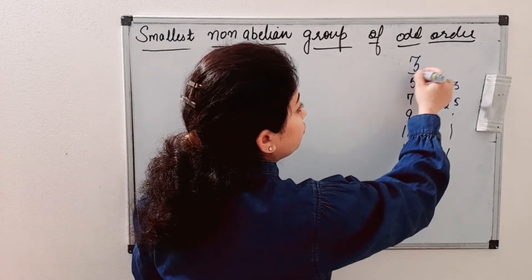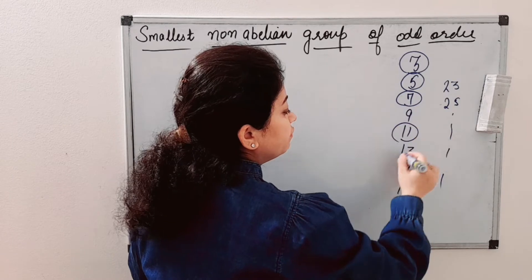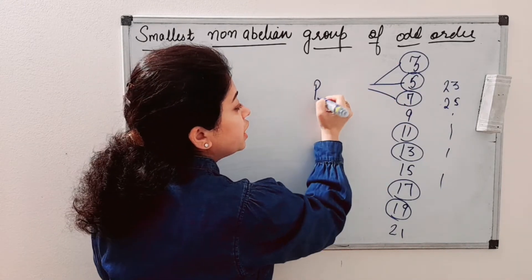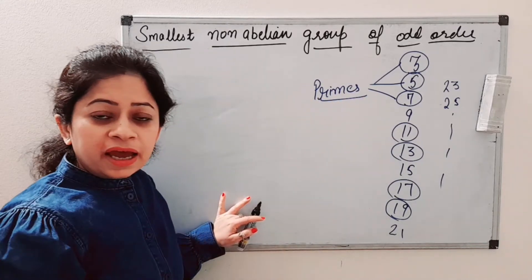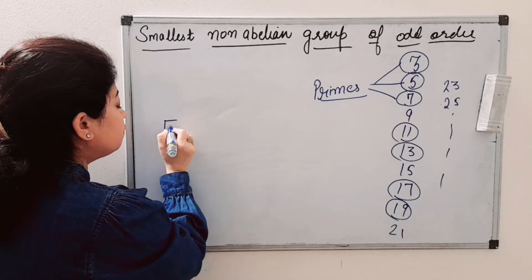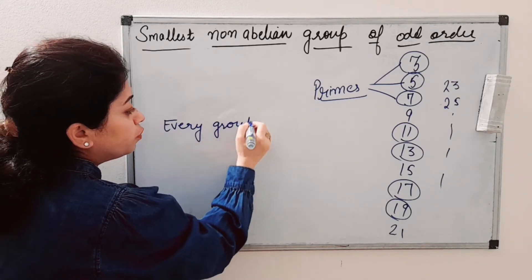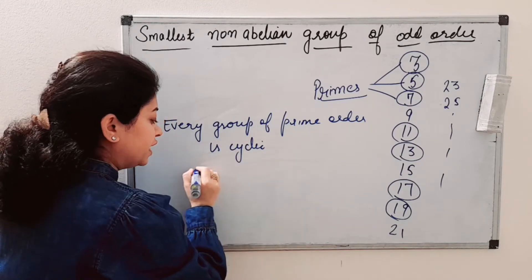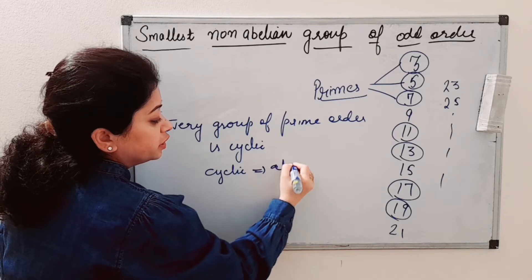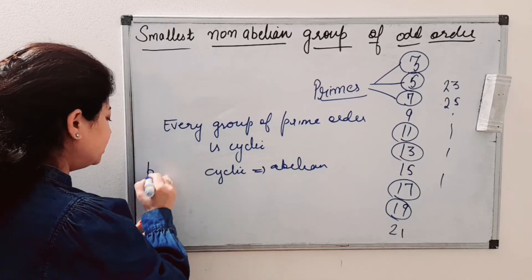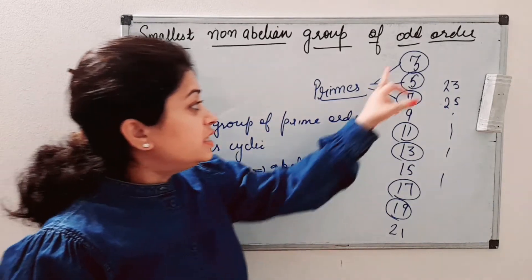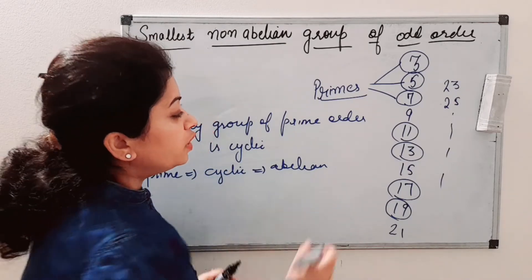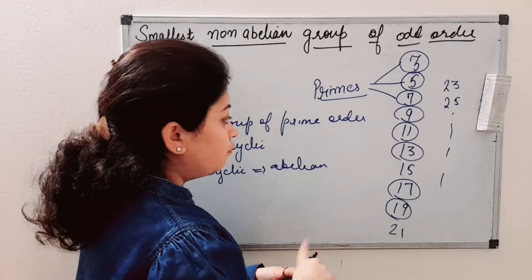We have 3, 5, 7, 11, 13, 17, and 19 — these are all primes. In a previous video we studied that every group of prime order is cyclic, and every cyclic group is abelian. So prime order implies cyclic, and cyclic implies abelian. That means groups of order 3, 5, 7, 11, and so on are all abelian.